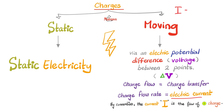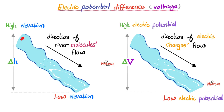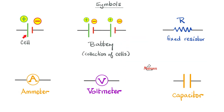Remember that I equals Q over T? That means the rate of flow of charges is the electric current magnitude. In order for water to go from uphill to downhill, there needs to be a delta H — an elevation difference. And in order for electric current to move from point A to point B, there must be a potential difference. You measure distance with a measuring tape, but you measure this difference with a voltmeter. Thank you, Alessandro Volta. An electric cell symbol, combined with a bunch of cells, gives you a battery. There is also a fixed resistor, ammeter, voltmeter, and a capacitor.